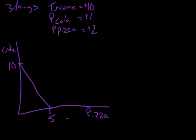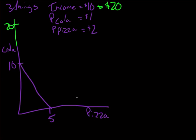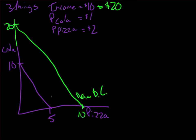Now it's time to see what would happen if the budget constraint would change. What would happen if our income level changed to, let's say, $20? The price of Cola and the price of pizza haven't changed. If I look at the quantity of Cola I could consume — $20 at a dollar each — I could now consume 20 units. And if I look at pizza, I could now consume 10 units. Linking these two points gives us our new budget constraint.